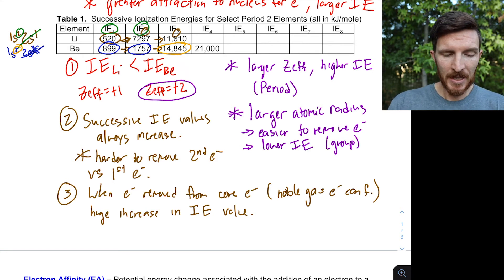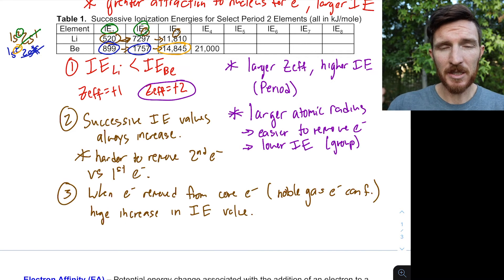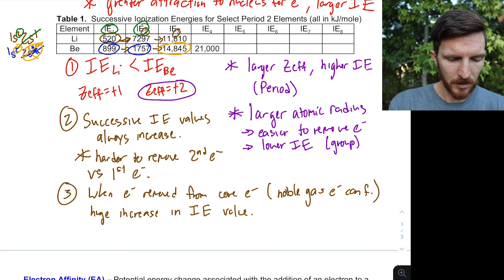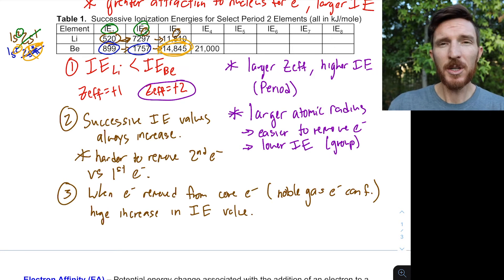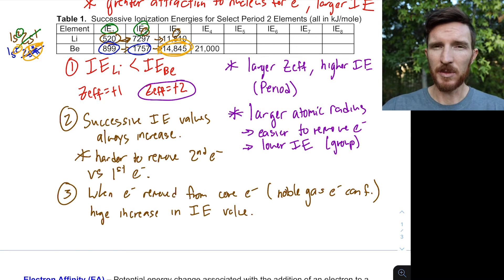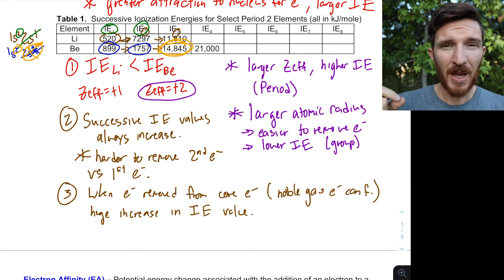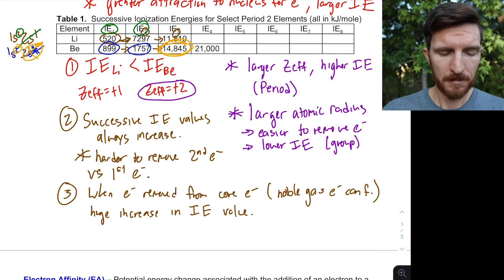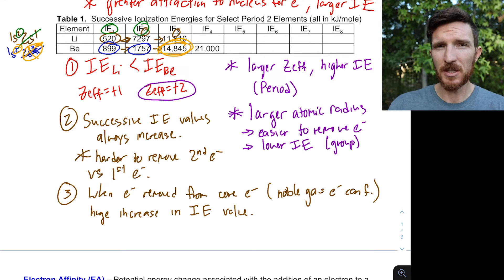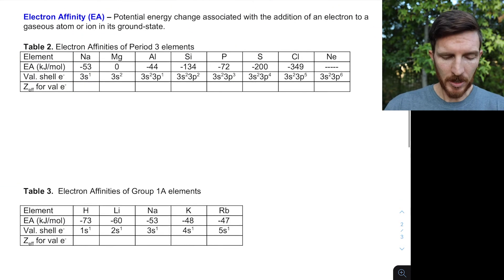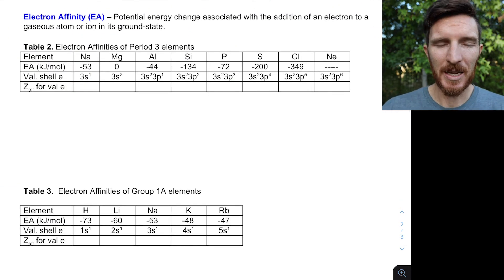This is another data point supporting why beryllium forms a +2 ion — it only loses its valence electrons. Making a +3 charge would require enormous energy to remove that third electron. This connects the idea of why certain atoms make specific ion charges when they form ions. These are observations we can make about ionization energies, and we'll go through applications of these in class.